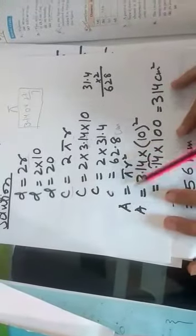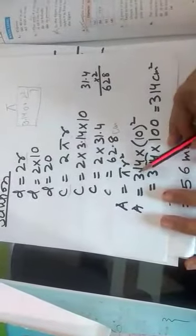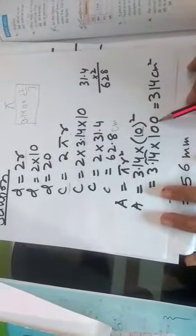Whatever unit is given you will mention it. In place of area, the formula is pi r square. Again you will put the values and see 3.14, and when you take the square of 10 it will become 100.